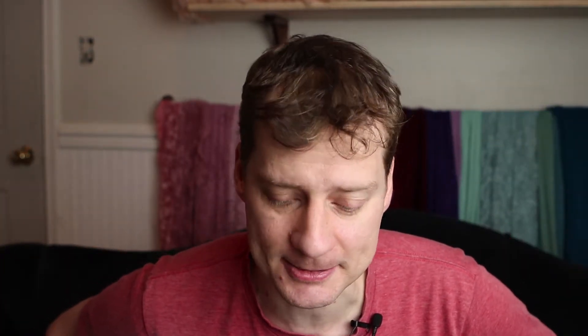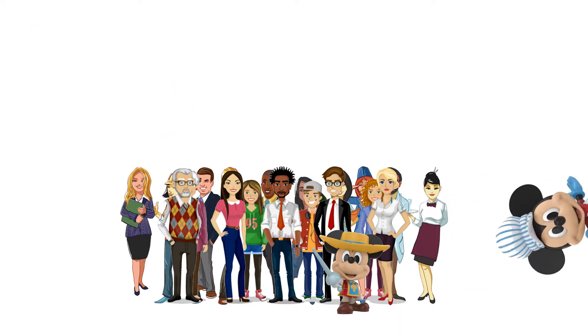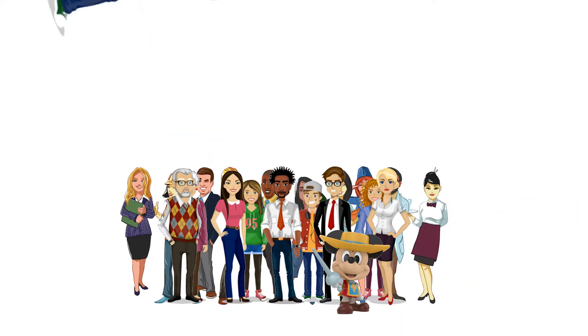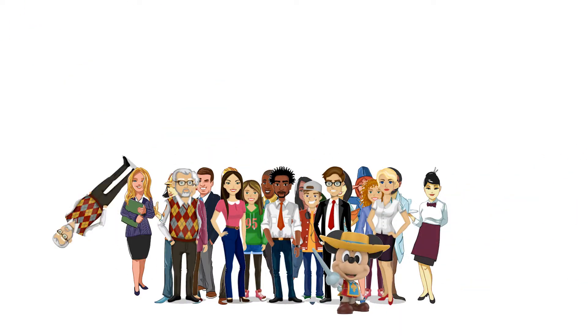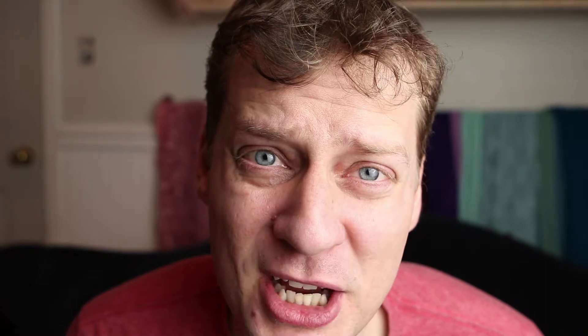Once we have defined our population, we have to sample from it. Ideally we do a random sample, so every person in this population has an equal probability of getting selected. If we do it right, then on average our sample will look like the population.